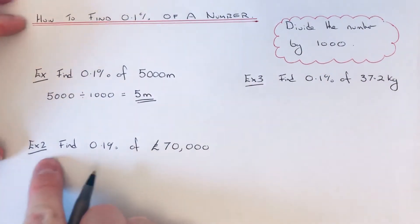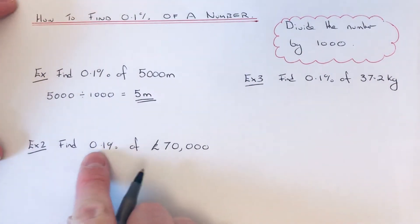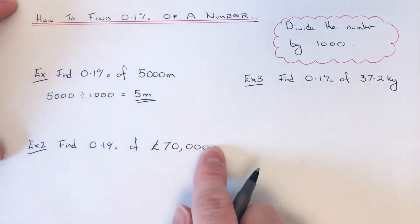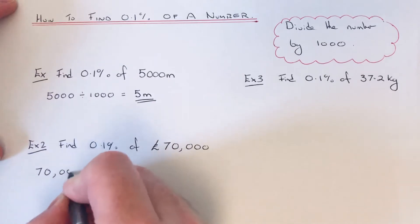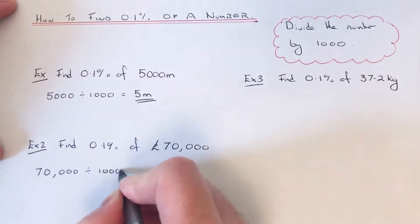Let's have a look at example two. We're going to find 0.1% of 70,000 pounds. Again we just need to divide 70,000 by 1,000.